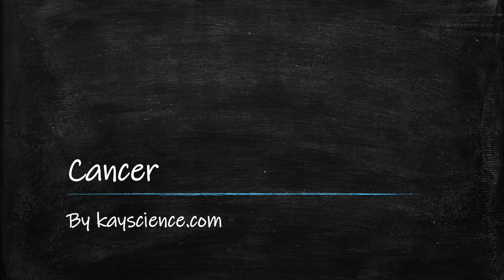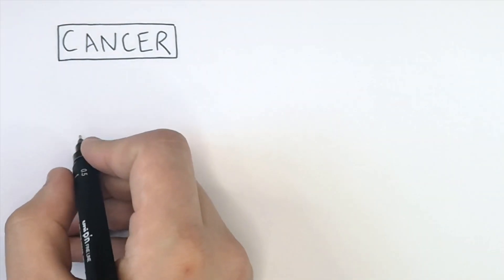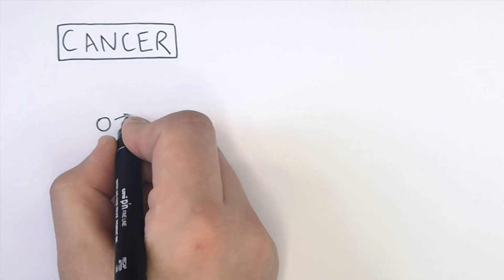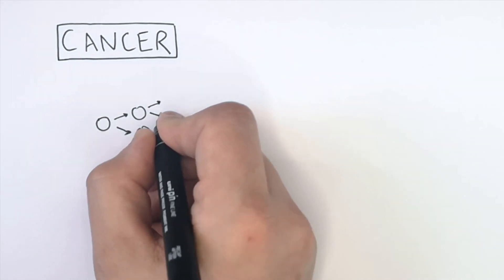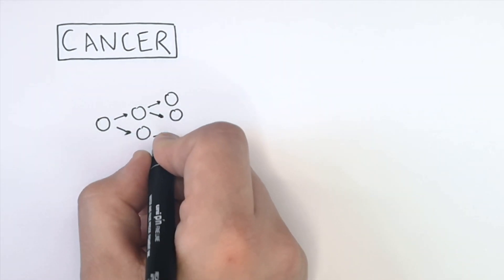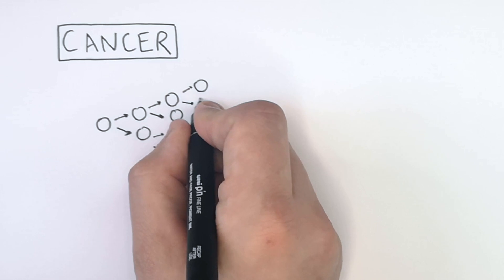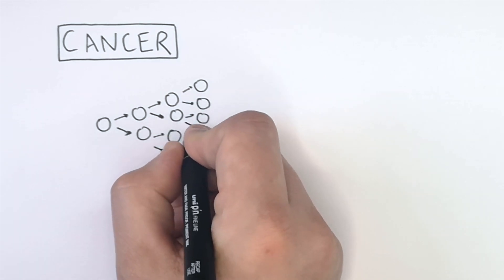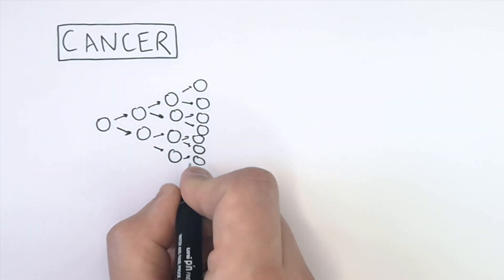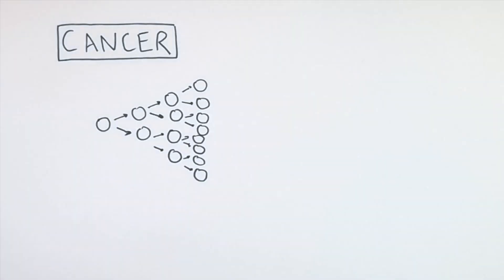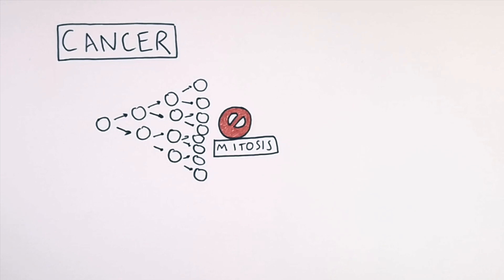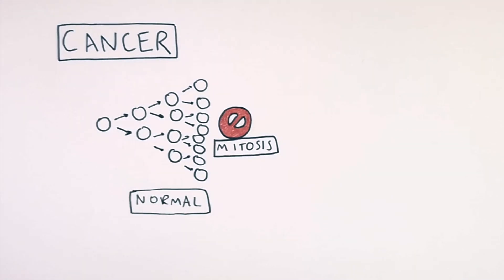This diagram shows one cell becoming two cells, those two cells becoming four, four becoming eight, eight becoming 16. When the tissue of the organ requires no new cells, mitosis stops. This is what normally happens — mitosis will stop when it has got enough cells in the tissue of the organ.